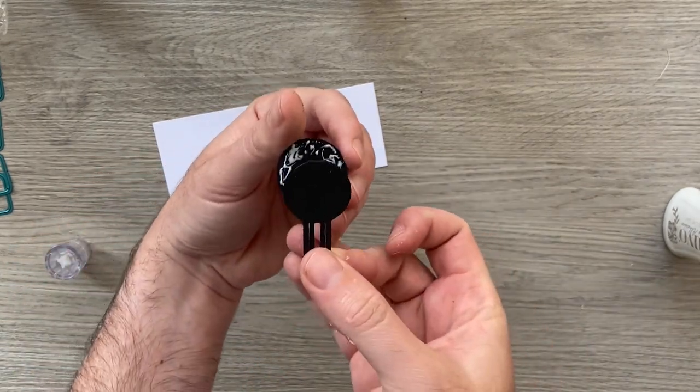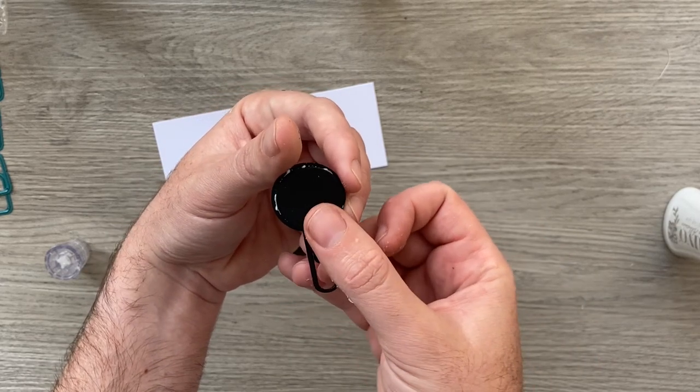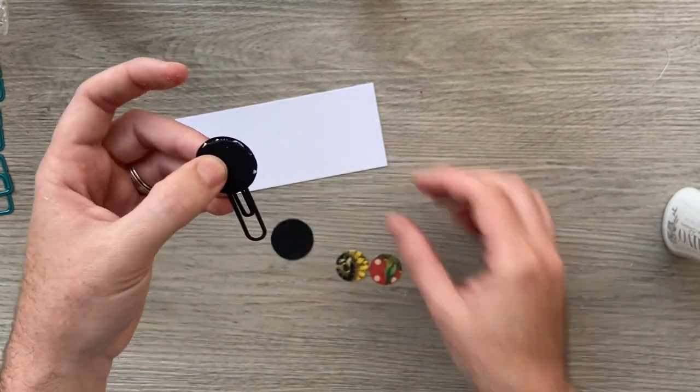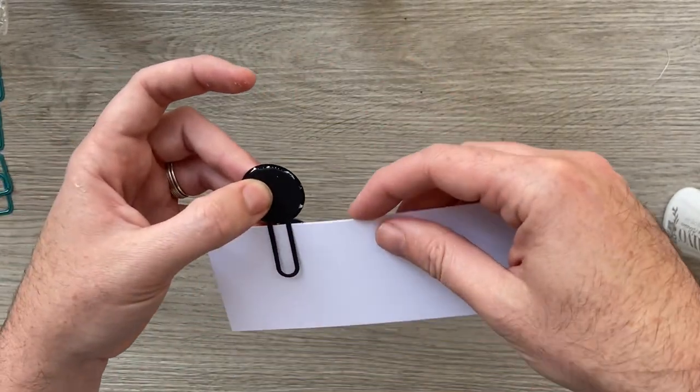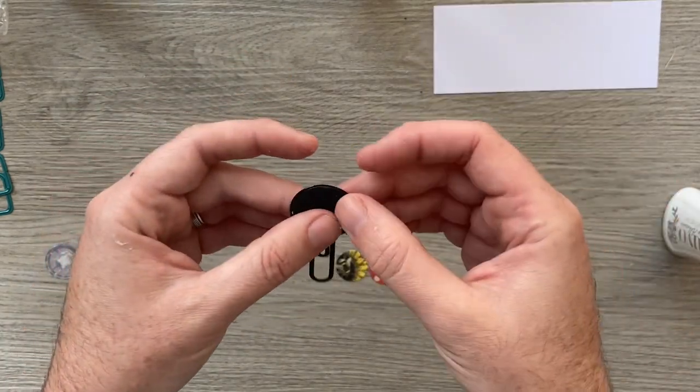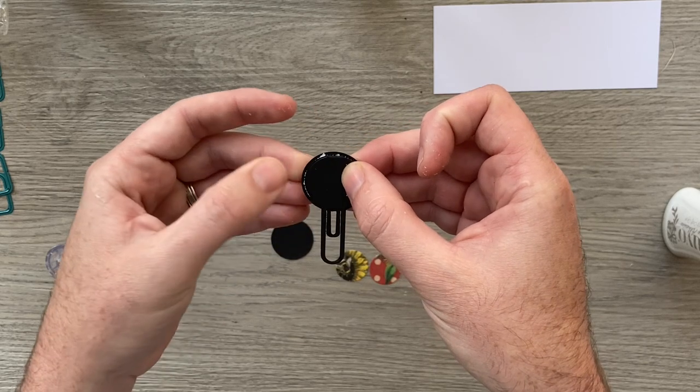That piece then is where the bottom of your paper clip goes. So that means when you're putting it on, it's slipping underneath that circle as well. There we go.